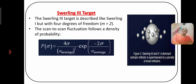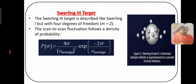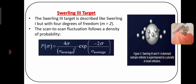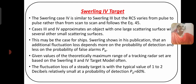Swerling Case 3 is described like Swerling Case 1 but with four degrees of freedom, where M equals two. The scan-to-scan fluctuation follows a probability density function. The Rayleigh probability function is: P(σ) = (4σ / σ_avg²) × exp(−2σ/σ_avg). In Swerling Cases 3 and 4, a dominant isotropic reflector is superimposed by a plurality of small reflectors.